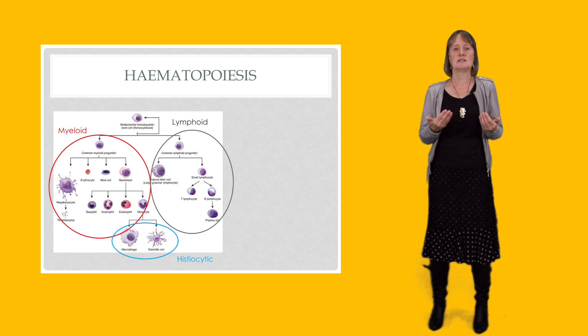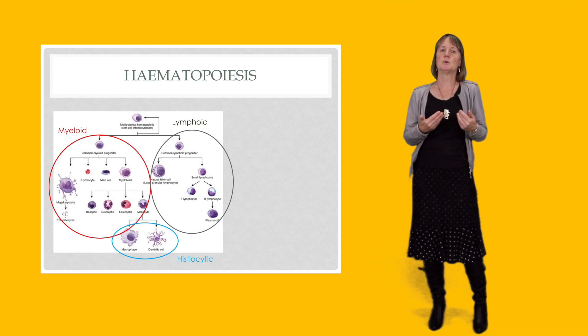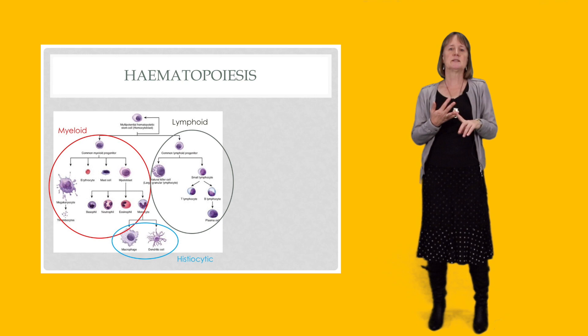This stem cell is capable of reproducing itself but also under the appropriate stimuli within the bone marrow of differentiating into either a myeloid progenitor cell or a lymphoid progenitor cell. The myeloid progenitor cell is then capable of differentiating further to produce the myeloid blood cells that we normally see in the peripheral blood.